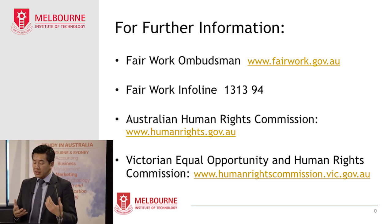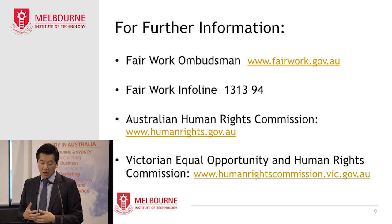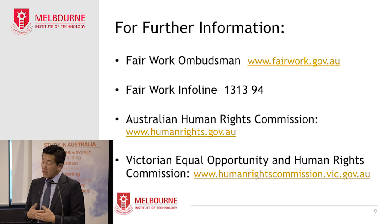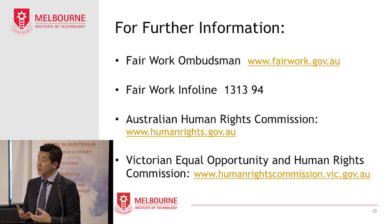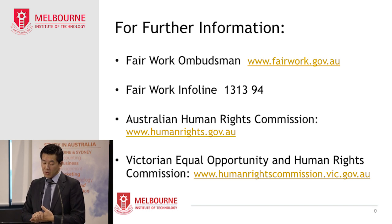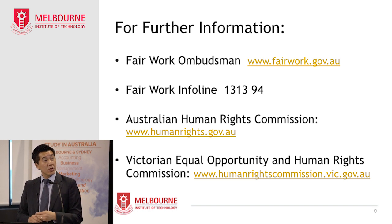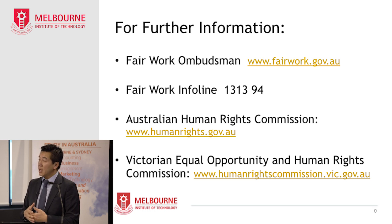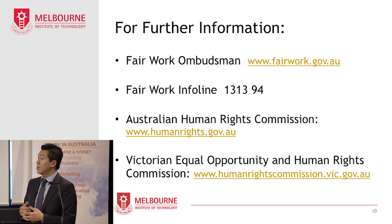You can get a lot more information on these topics through the relevant government agencies. For further information about workplace rights, awards and minimum wages, you can visit the Fair Work Ombudsman's website. There's also a Fair Work info line where you can contact for general advice and information. For information about discrimination, harassment and bullying, you can visit the Australian Human Rights Commission's website and the Victorian Equal Opportunity and Human Rights Commission's website. We've also got a couple of handouts — some useful fact sheets from the Fair Work Ombudsman about workplace rights.